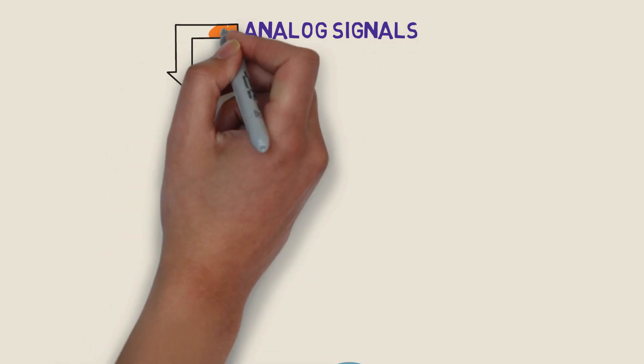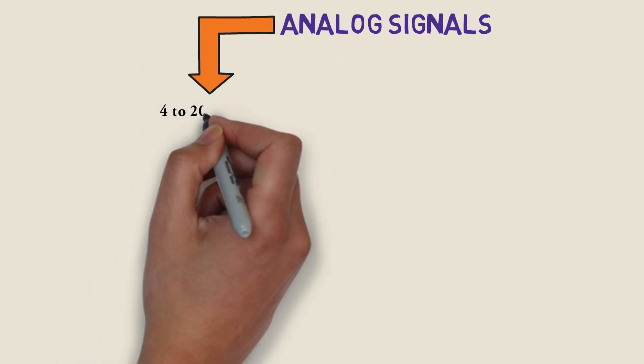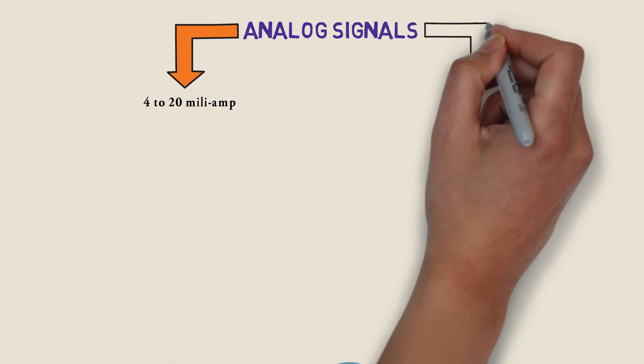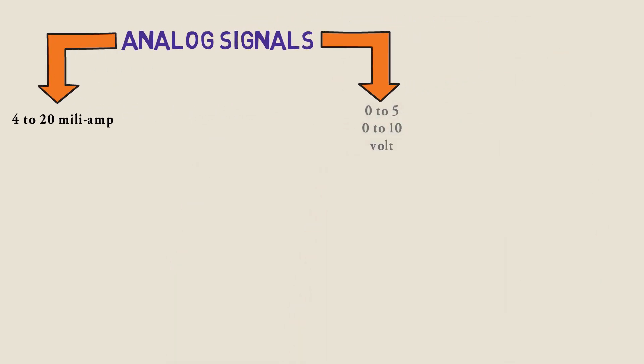Analog signals can take many different forms. Some of the more common are 4 to 20 milli-amp signal, or a 0 to 5 or 0 to 10 volt signal.